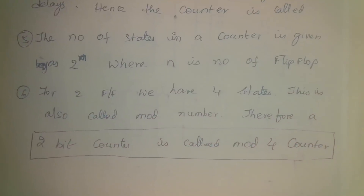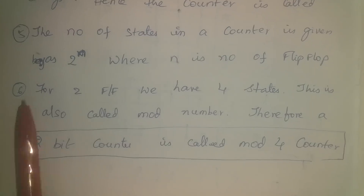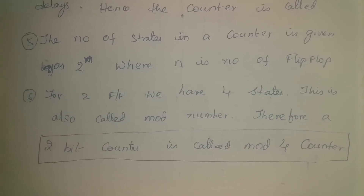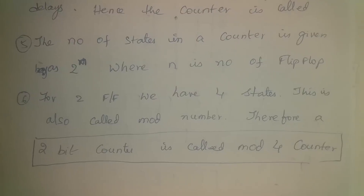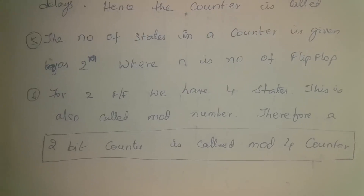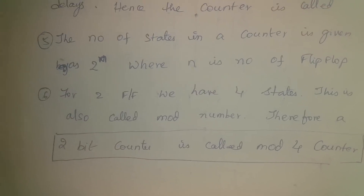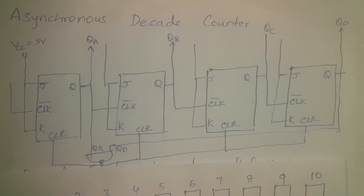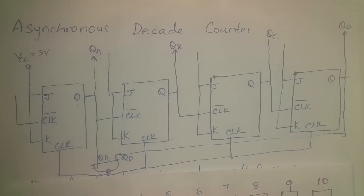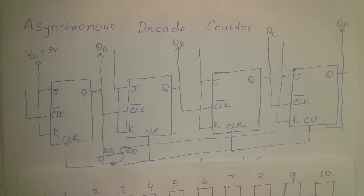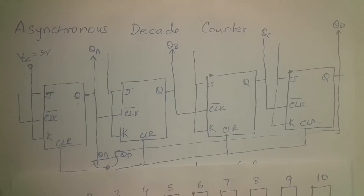The number of states in a counter is given by 2^n where n is the number of flip-flops. This is a 2-bit, mod-4 counter. Now let's discuss the decade counter, which counts 10 states. Here is an asynchronous decade counter using JK flip-flops.